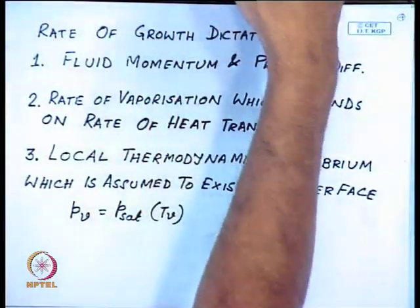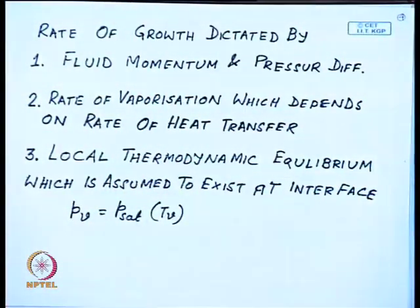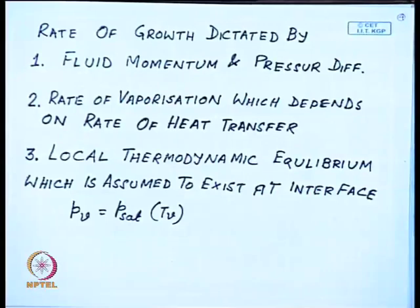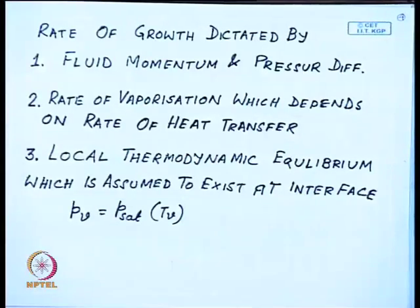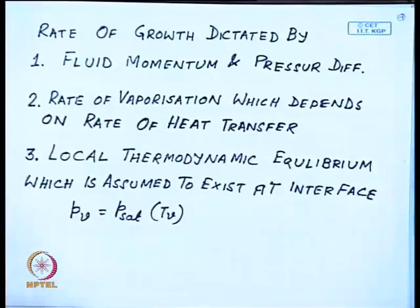There are three very important points about how bubble growth takes place. First, the rate of bubble growth is dictated by fluid momentum and pressure difference. Second, the rate of vaporization depends on the rate of heat transfer. Third, at the interface, local thermodynamic equilibrium is assumed to exist. Thermodynamic equilibrium will not be present over the entire bulk of the fluid considering both vapor and liquid, but it is assumed to exist at least at the interface, so that pressure equals P_sat corresponding to T_V.